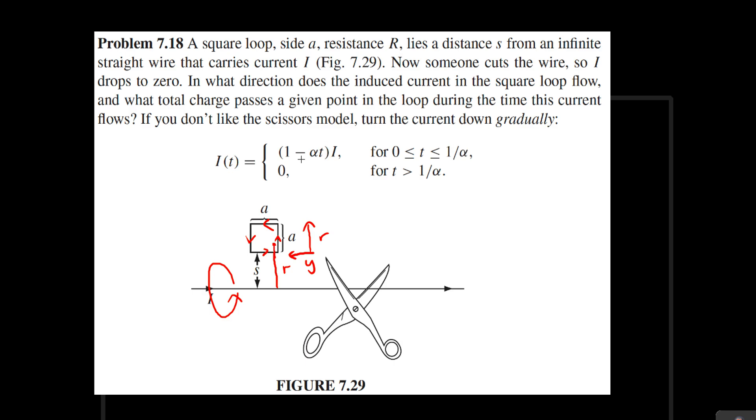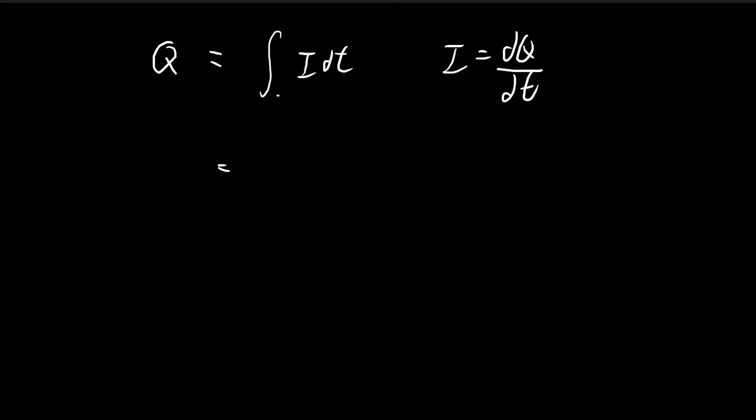So only from 0 to 1/α is there going to be current running along this wire. Once it exceeds 1/α, the current drops to 0. There is no more change, so there is no more induced EMF. So there will be no more charge flowing along the wire. So for our t, we are going to integrate from 0 to 1/α.